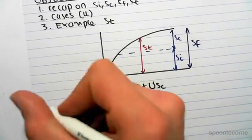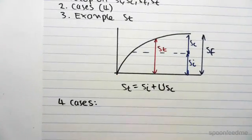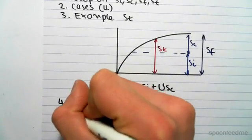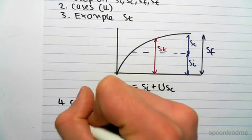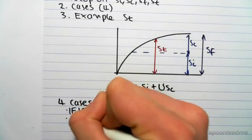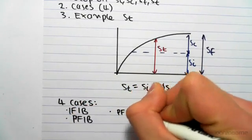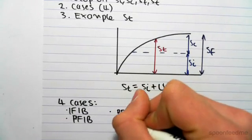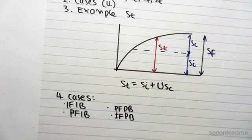So just before we start, for these types of questions for 3D settlement, there's four cases which could be given. You can either have an impermeable footing and an impermeable base, a permeable footing and an impermeable base, a permeable footing and a permeable base, or an impermeable footing and a permeable base. So what do these all mean?